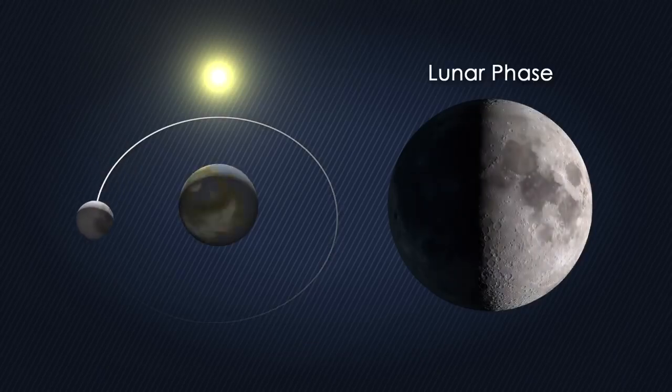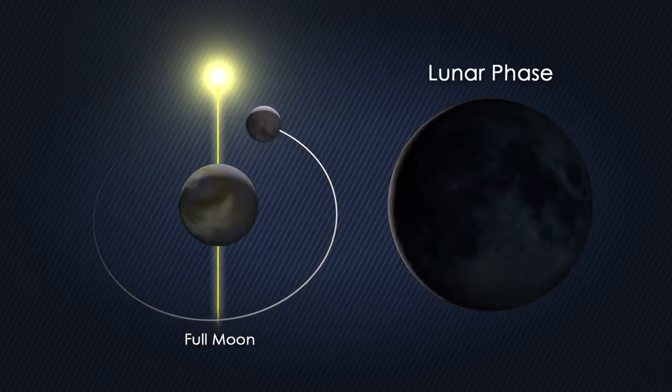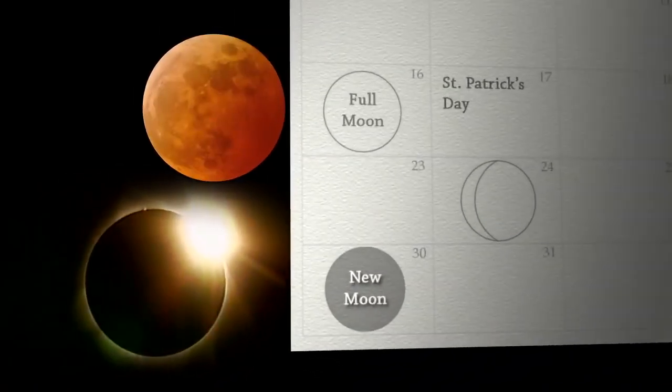But the moon circles the Earth every month as it cycles through its phases, lining up at both full moon and new moon. So why don't eclipses happen twice a month?